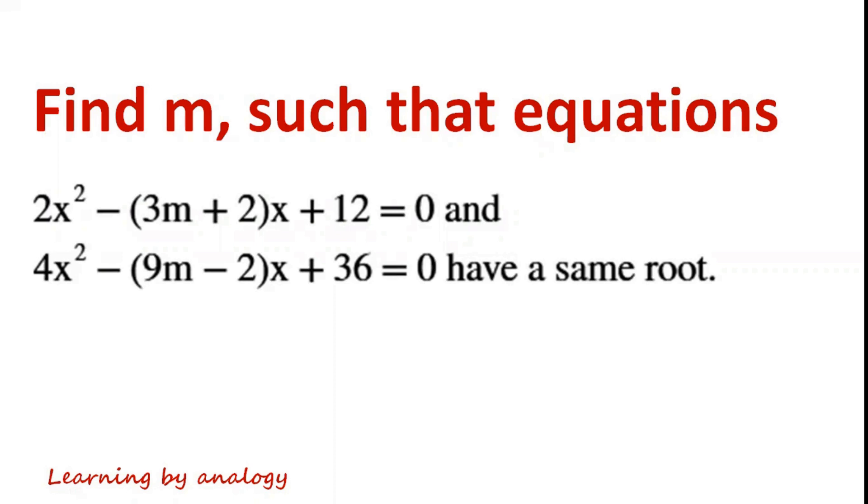Find m such that equations 2x squared minus 3m plus 2 times x plus 12 equals 0 and 4x squared minus 9m minus 2 times x plus 36 equals 0 have the same root.